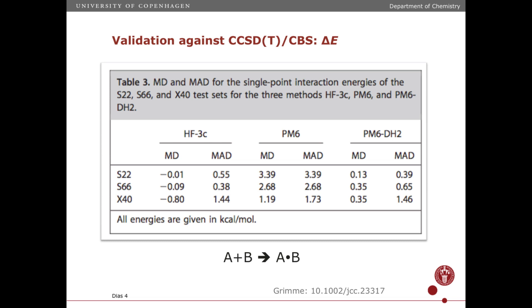Here are binding energies — electronic binding energies, not free energies. They're fitted against coupled cluster complete basis set limits. The mean absolute deviation for the Hartree-Fock 3C method is, on average, less than one kilocalorie per mole compared to the coupled cluster complete basis set limit. And the amazing thing is, if you throw in a density functional with larger basis sets, this error does not really change — you're where you want to be accuracy-wise.